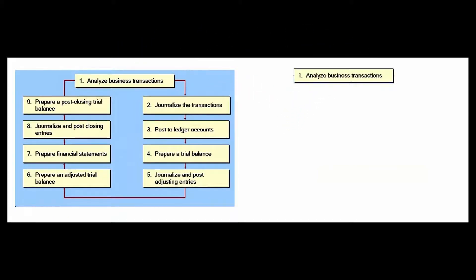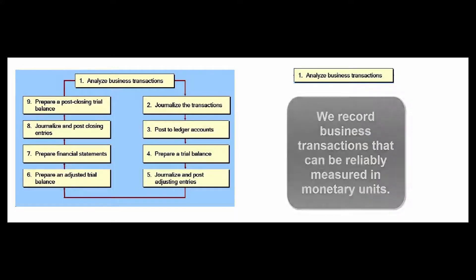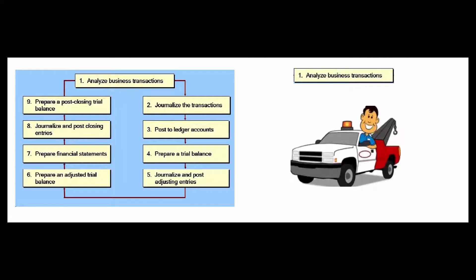Step one: we analyze business transactions to see if there's something for us to record. If there's something that can be reliably measured in dollars, we will record it. Not everything gets recorded in our accounting records. For example, Freddy of Freddy's Auto Service rescues a motorist on the freeway and shows up on the news as a hero. That's good for business, but there's no way to reliably measure how good that is, so there's no journal entry to make.